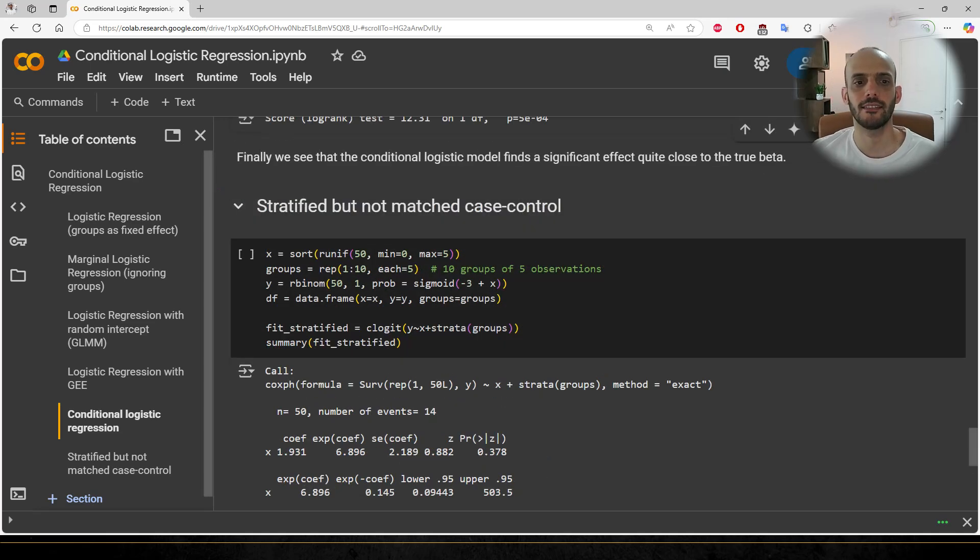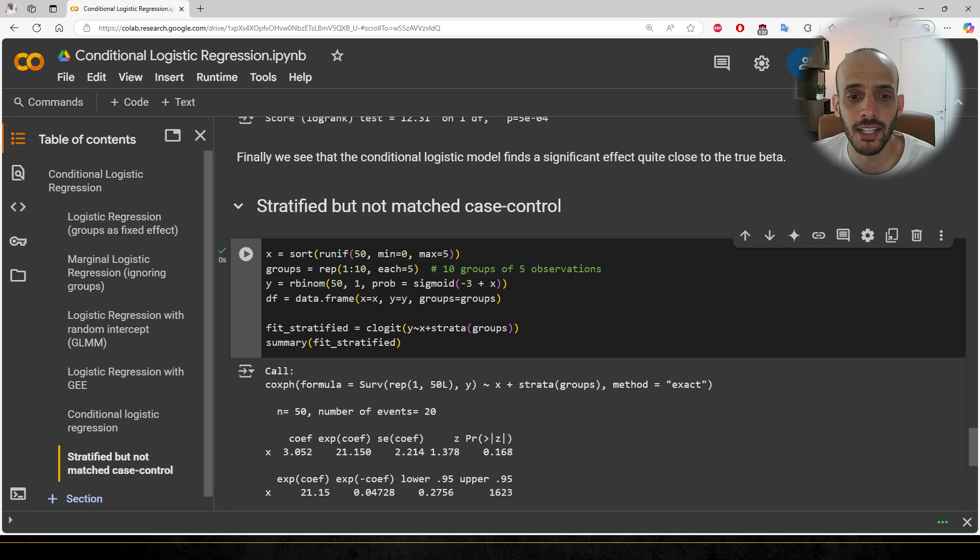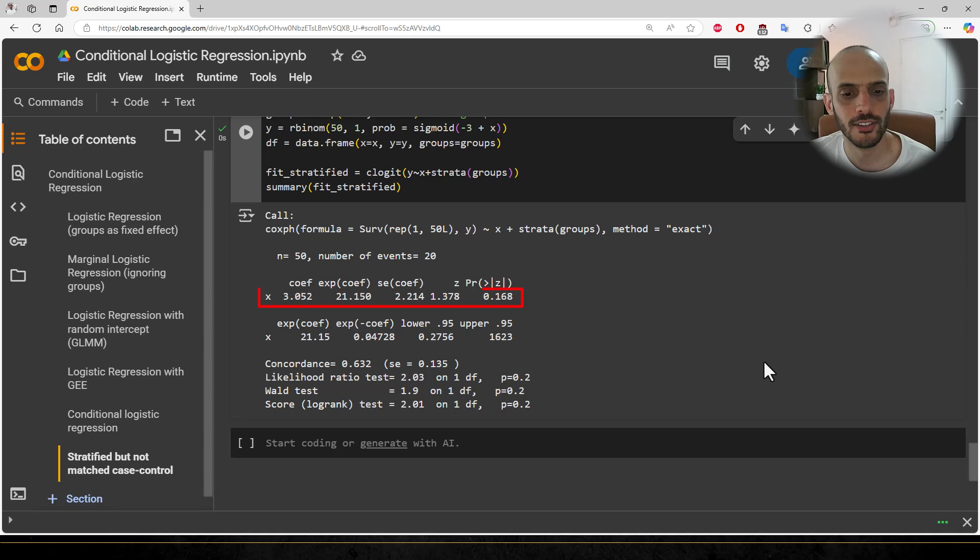My final point here is that you need to be cautious when the data is stratified rather than truly matched. In this example, I create 50 X values and I order them from 0 to 5, assigning 5 observations per strata. The Y values are generated from a Bernoulli distribution with the true logits following this model. Because I order the X values before assigning the groups, there is very little within-group variation, but a strong between-group effect. As a result, the conditional logistic regression model fails to detect the effect.